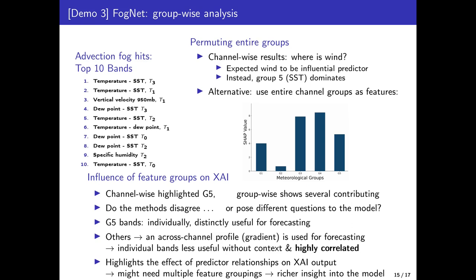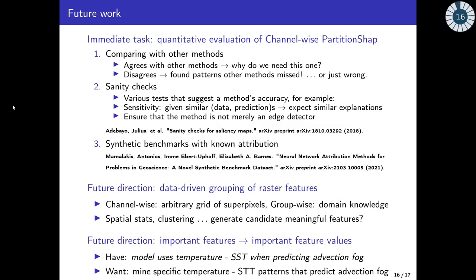We believe that the XAI results reflect properties of the channels within the group. Individual channels in Group 5 are useful for fog forecasting, but many other bands are part of across-channel patterns used for prediction — such as the thermodynamic profile in Group 3. Channel-Wise Partition SHAP is unlikely to detect their influence, since it permutes within a single level of that profile, and enough of the gradient is preserved for prediction. Removing the entire profile evidently changes the prediction enough to assign contribution to features such as wind. This result highlights how the nature of the data and choice of feature grouping influences XAI results — you can trick yourself into preferring the explanation that matches what you expected.